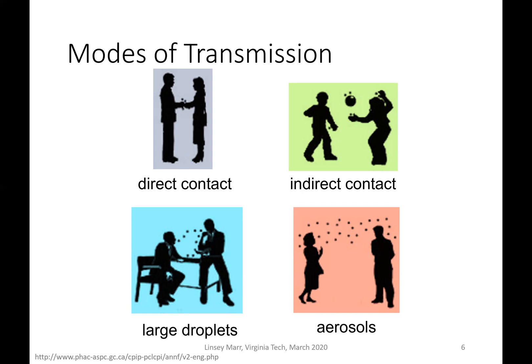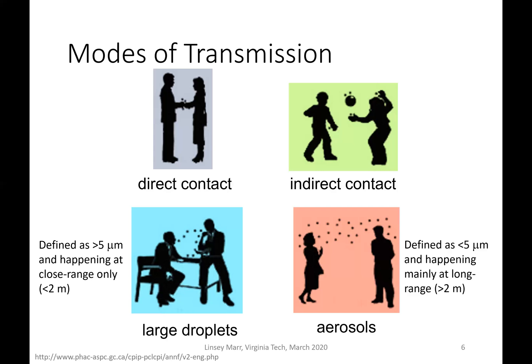There is also the large droplet route, which involves the sick person who maybe coughs or while talking sprays large droplets that land directly on your eyes, nose, or mouth. And then finally there's the aerosol route, where the sick person releases virus in very small droplets that end up floating around in the air, and even at a distance you can inhale them. Typically, large droplet transmission is defined as droplets larger than five microns that happens only at close range — less than two meters or so. Aerosol transmission is defined as happening with droplets smaller than five microns and happens mainly at long range. But we'll see later on that this definition is somewhat arbitrary and is limiting our understanding of transmission.